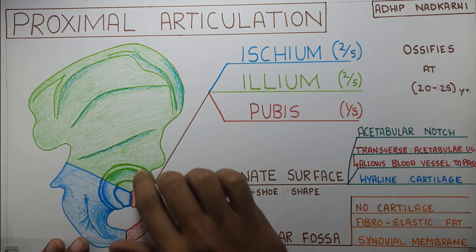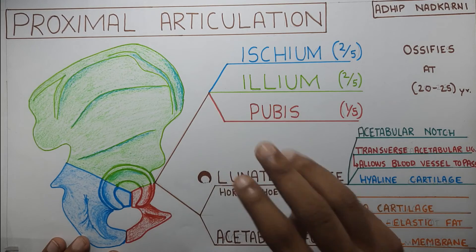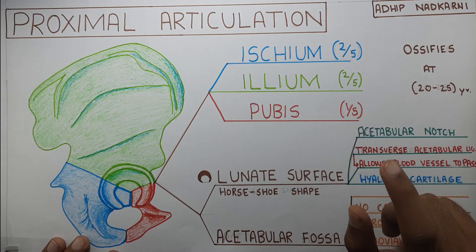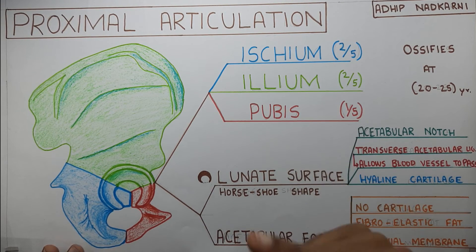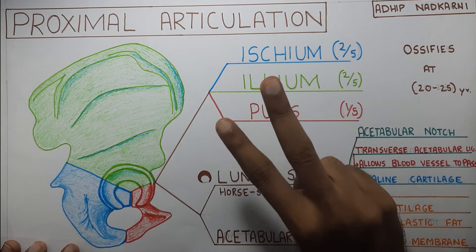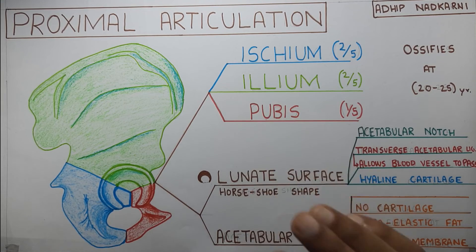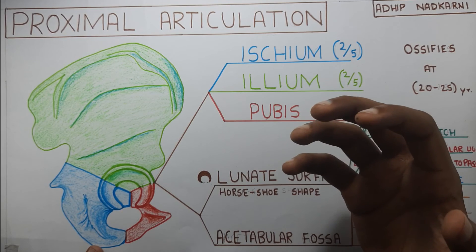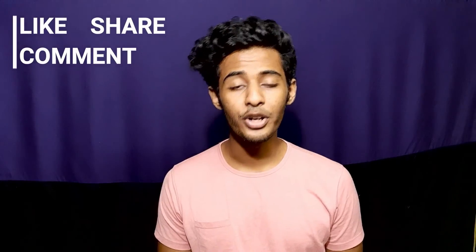To summarize: we talked about the acetabulum, which has two parts — the lunate surface on the outside and the acetabular fossa. It is made up of three bones: ischium, ileum, and pubis, which ossify at 20 to 25 years. The labrum is fibrocartilaginous, has proprioceptive function, has lots of nerve endings making it painful when injured by impingement, and can lead to degenerative disease. We covered two angles: the central edge angle, indicating inferior orientation of the acetabulum, and acetabular anteversion, indicating anterior orientation. That's all for today — thank you for watching, please share, like, comment, and subscribe. See you in the next video!